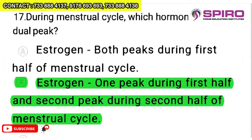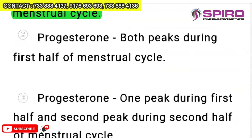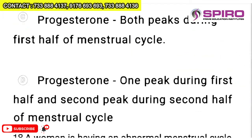Question 17: during the menstrual cycle, which hormone shows a dual peak? Open the NCERT book and look at the menstrual cycle diagram — estrogen shows one peak during the first half and a second peak during the second half of the menstrual cycle. That is called a dual peak. So the option is B — estrogen. Once you open the book and see it, your mind will register this.